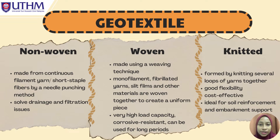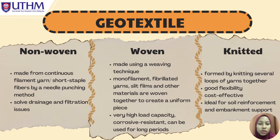Woven geotextile is corrosion resistant and can be used for long periods. Next is the non-woven geotextile, which is made from continuous filament yarn or short staple fiber by a needle punching method, either chemically or thermally. It is widely utilized to solve drainage and filtration issues since it cannot be dissolved by water, which protects geomembrane lining systems from both interior and exterior penetration.